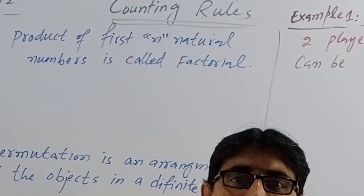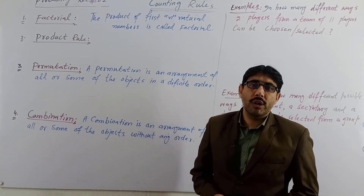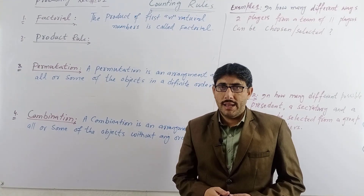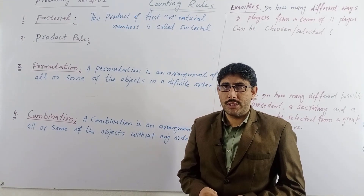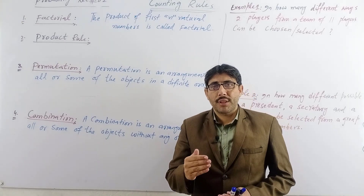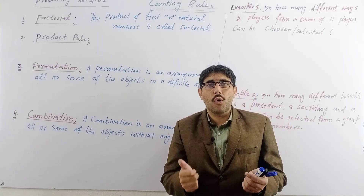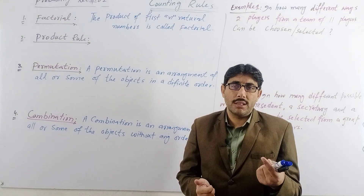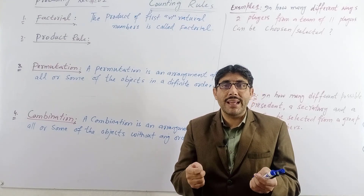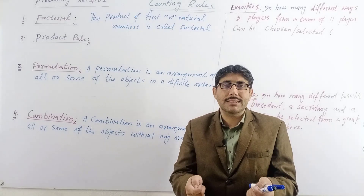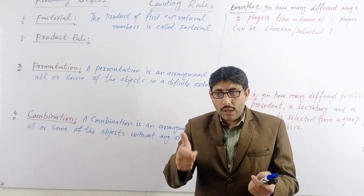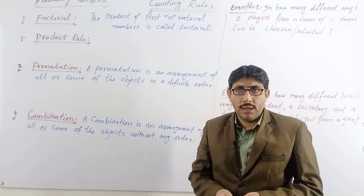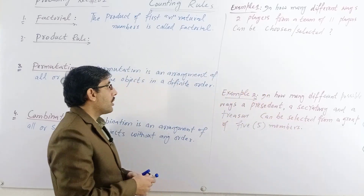To understand the product rule, consider a compound experiment — an experiment that has more than one sub-experiment. For example, we have a coin and a die. We toss both simultaneously: we toss the coin and roll the die at the same time.